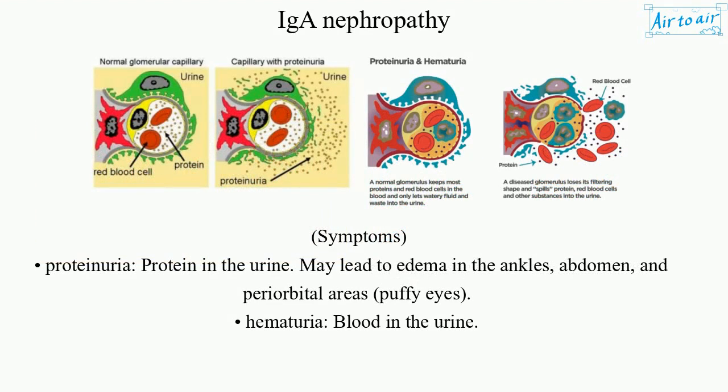Symptoms. Proteinuria — protein in the urine — may lead to edema in the ankles, abdomen, and periorbital areas, causing puffy eyes. Hematuria — blood in the urine.